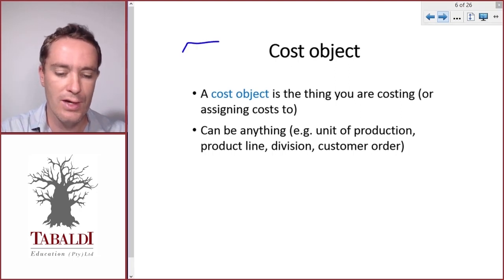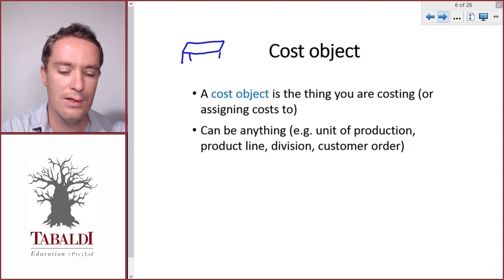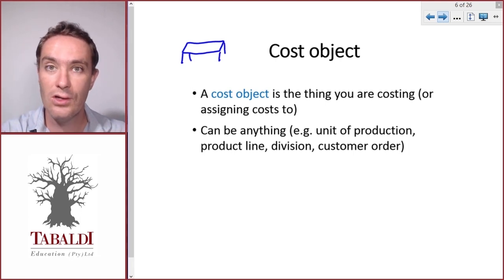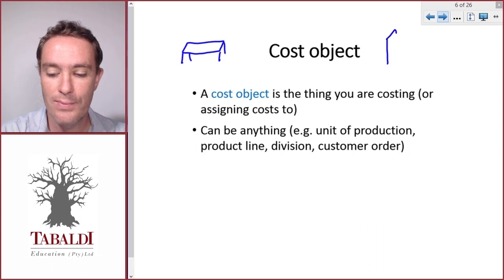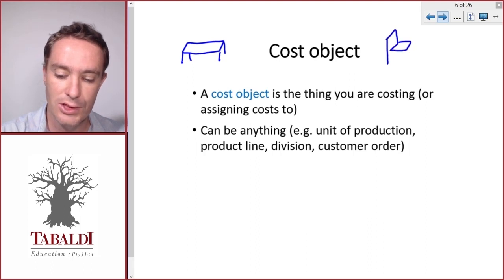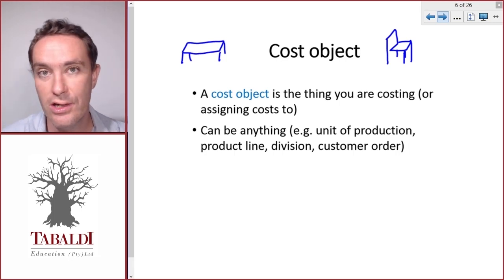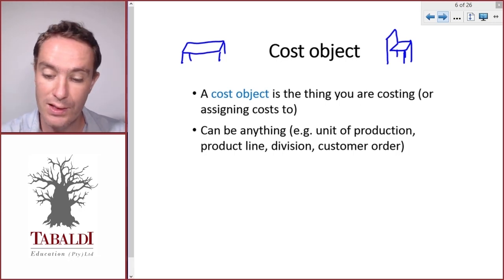In our table-making company, a table could be a cost object—we're trying to calculate what the cost of one table is. If Leila also started making chairs, expanding her business, one chair could be a cost object. We'd be trying to calculate the cost of one chair.